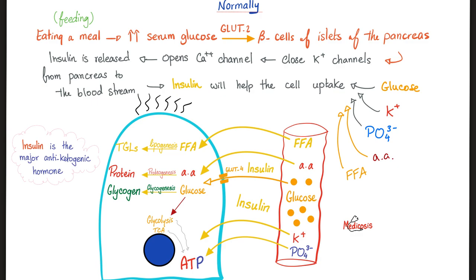Remember the story of insulin? Insulin pushes five things into the cell: glucose, amino acids, free fatty acids, potassium, and phosphate. This is very important. If I lack insulin, potassium will not enter the cell — potassium will stay outside, causing hyperkalemia.